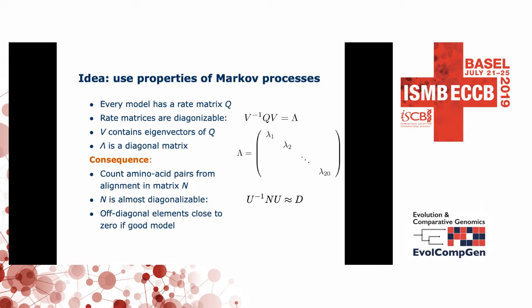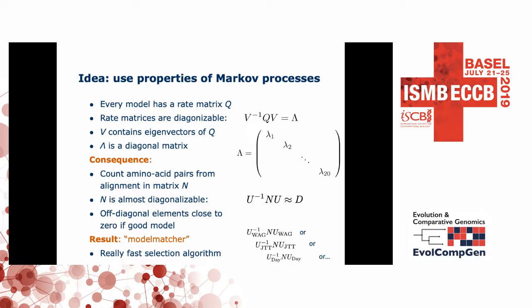This suggests a simple method. All you need to do is compute U matrices for the different models you are considering, and then apply them one by one to see which one produces the smallest off-diagonal elements. Basically, which product, when applying U, gives what is closest to a diagonal matrix?